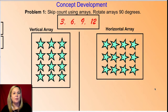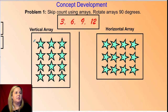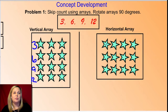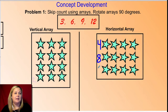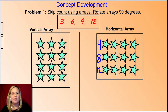For this rotated array, let's skip count to match it. Last time we did three, six, nine, twelve. Now, because they're in groups of four, we're going to skip count by fours: four, eight, twelve.